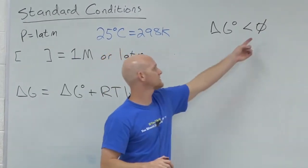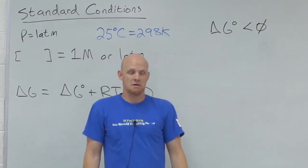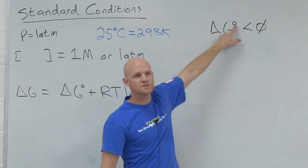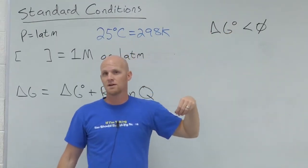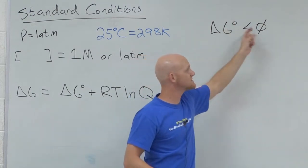It means it's spontaneous at standard conditions. Is it spontaneous under non-standard conditions? I don't know. It might be. But this doesn't tell me about non-standard conditions. This little circle only tells me about standard conditions. So under standard, equal amounts of both, it's spontaneous. Delta G standard is negative.